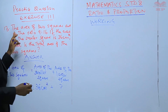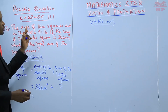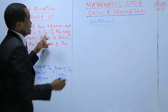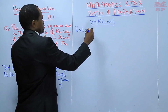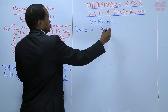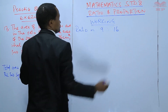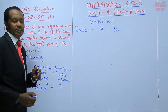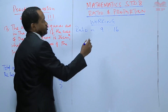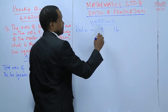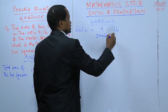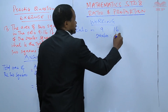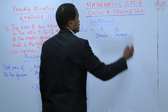We are told that the area of two squares are in the ratio 9 to 16. The ratio of the two squares is 9 to 16. Here, 9 represents the ratio for the smaller square, and 16 is the ratio for the larger square.